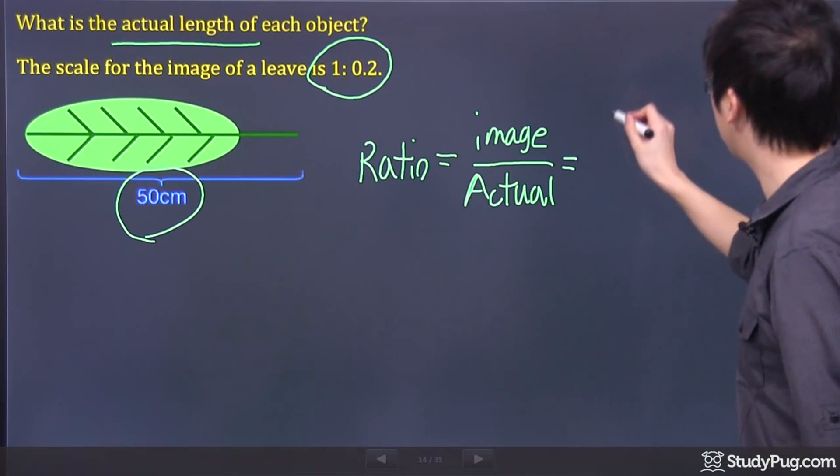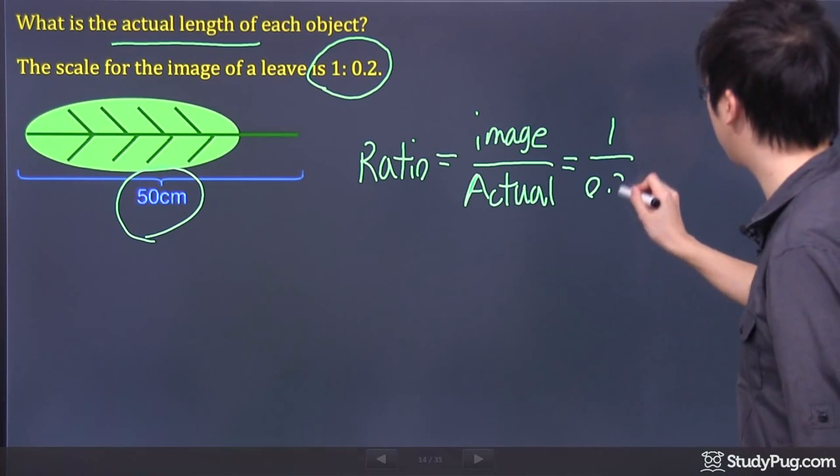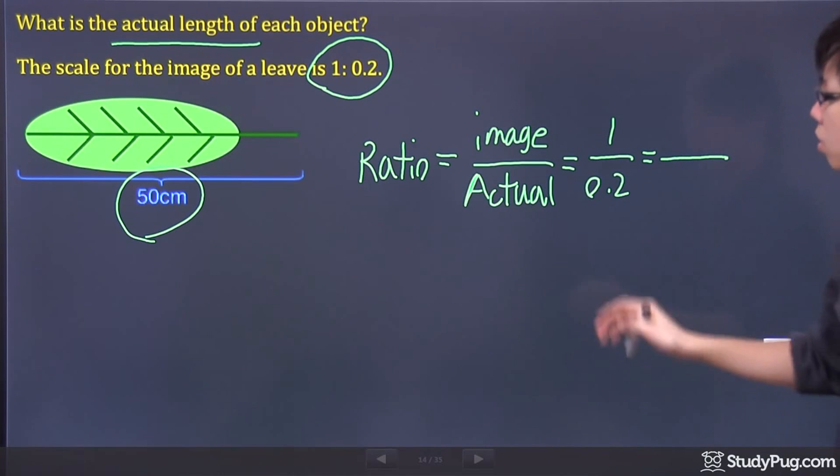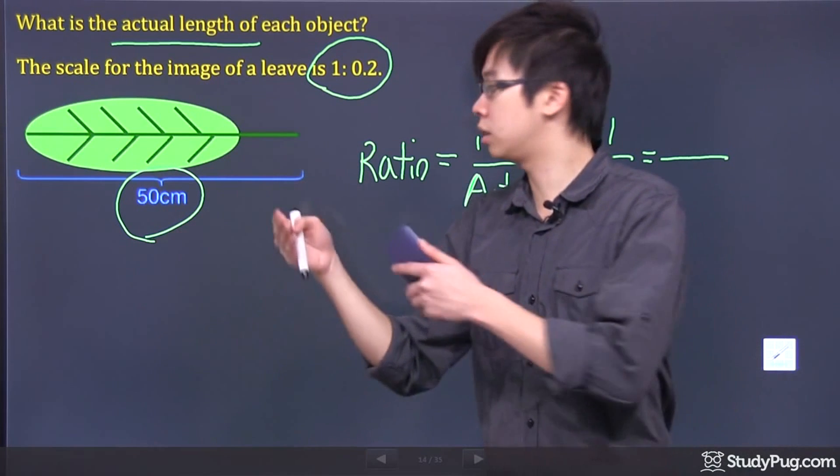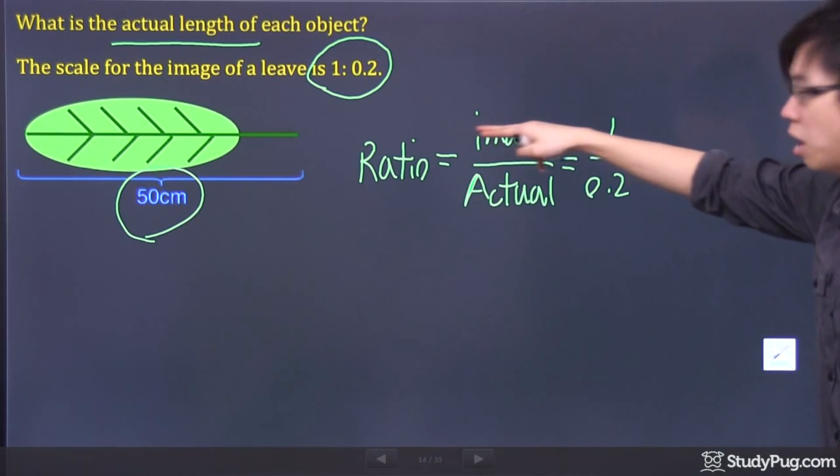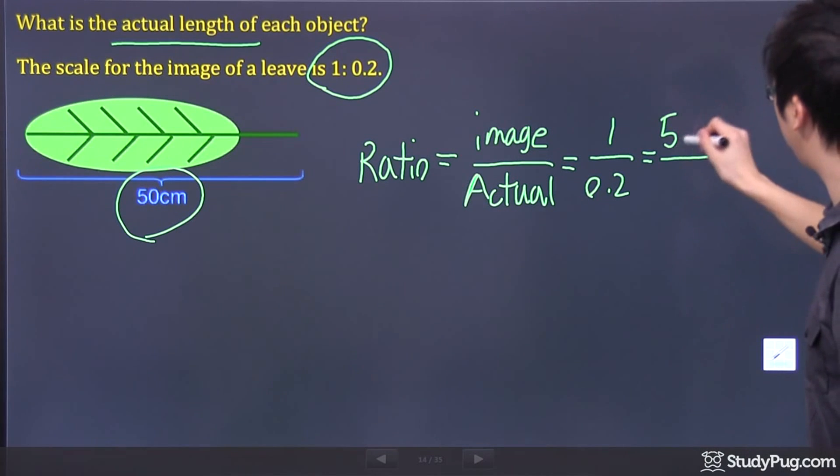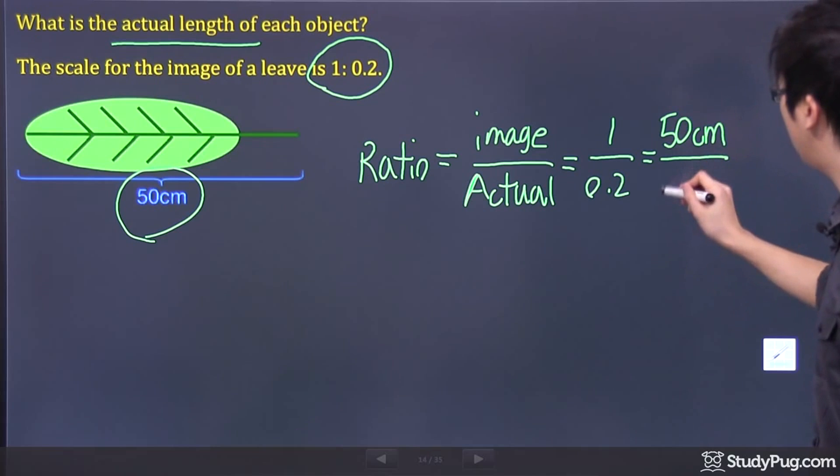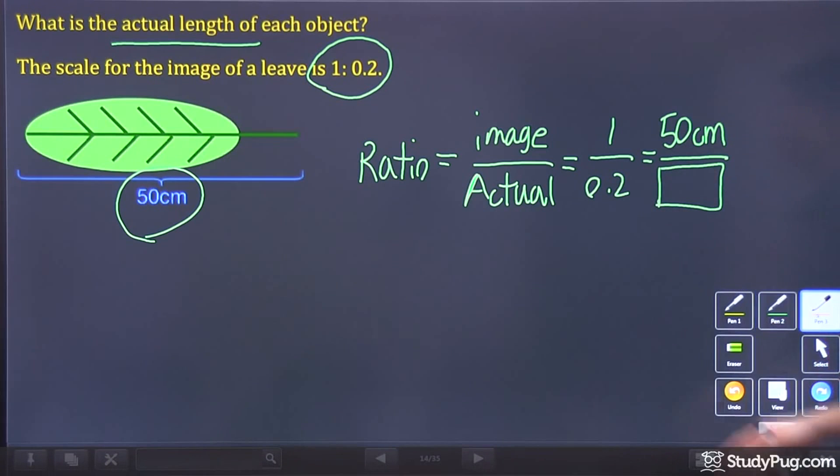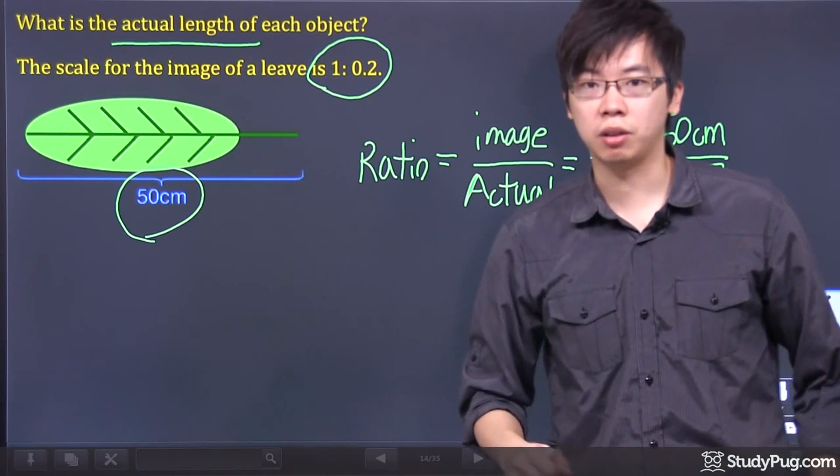So I'm just going to continue my work right here. So this is my 1, this is my 0.2. And I'm going to make it equal to another fraction here because I do know the length of my image. It's 50 centimeters. So again, the image goes on the top. Here's my 50 centimeters, and the missing number is this part right here, which is the actual, the length of the object.